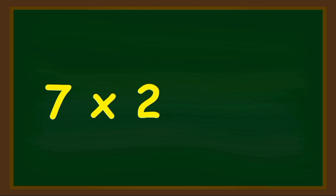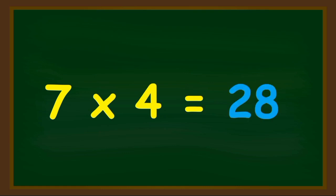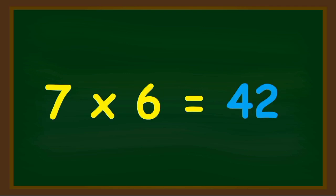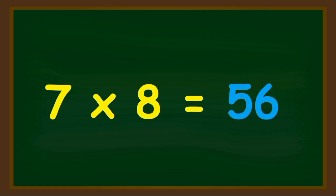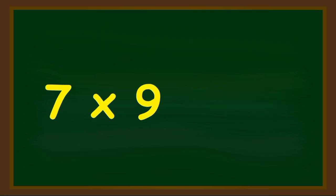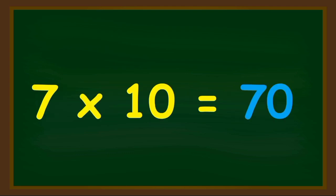Seven ones are seven. Seven twos are fourteen. Seven threes are twenty-one. Seven fours are twenty-eight. Seven fives are thirty-five. Seven sixes are forty-two. Seven sevens are forty-nine. Seven eights are fifty-six. Seven nines are sixty-three. And seven tens are seventy. Okay kids, now we will learn again, so let's repeat.